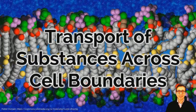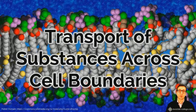Hi everyone, this is lesson number six on the topic of cells for students of GCSE biology. In this lesson we're going to be looking at the various ways in which substances are transported across the membranes of cells, and this is going to include diffusion, osmosis, and active transport.